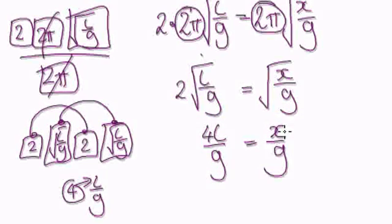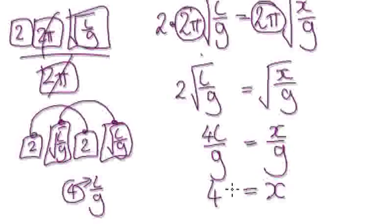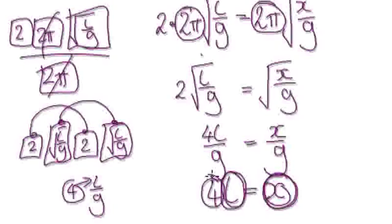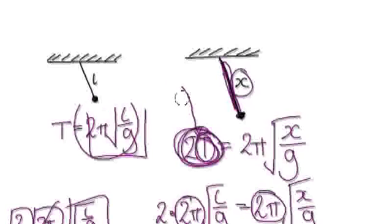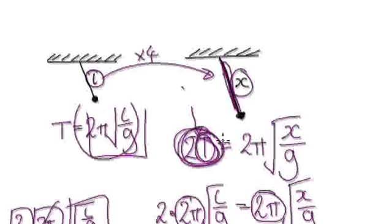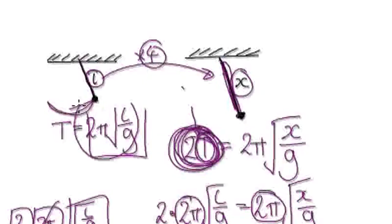We now have x/G = 4L/G. Multiply both sides by G, and that gives x = 4L. So to double the time it takes to do one swing, you should multiply the length of the string by 4.